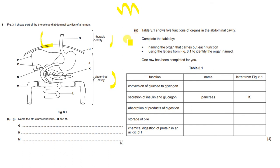We have a figure showing part of the thoracic and abdominal cavities of a human. Name the structures labeled G, H, and M. G is the esophagus, H is the diaphragm, and M is the large intestine.